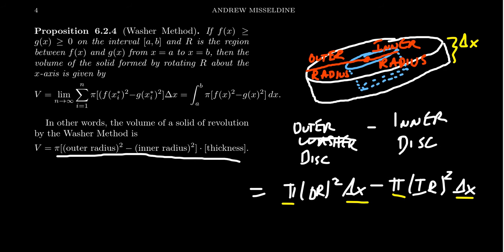Now, suppose that the outer radius is given by some function, we'll call it f of x. And then the inner radius is given by some other function, which we call g of x. Then what this translates to is that for a single washer, we're going to have pi times f of x_i star squared minus g of x_i star squared times the thickness delta x.